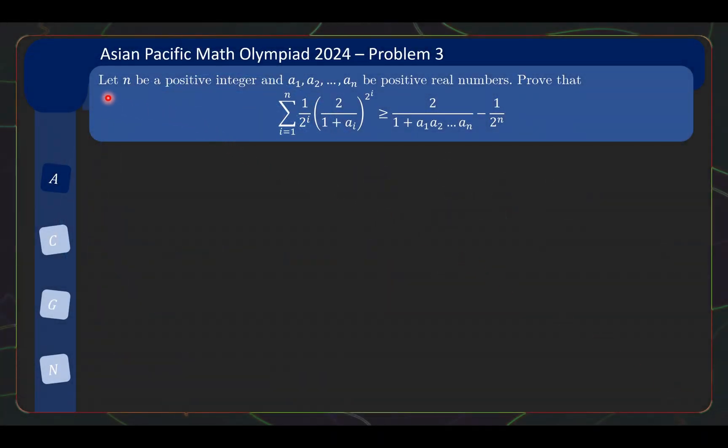So here is problem number 3. Let n be a positive integer and a₁, a₂, ..., aₙ be positive real numbers. Prove the following inequality. This inequality looks a bit complicated, so let me help you digest it by writing out an explicit example when n equals 3 to just get a view of how this inequality looks like. When n equals 3, I'm also going to use a, b, c instead of a₁, a₂, a₃ just to simplify the look and feel of it.